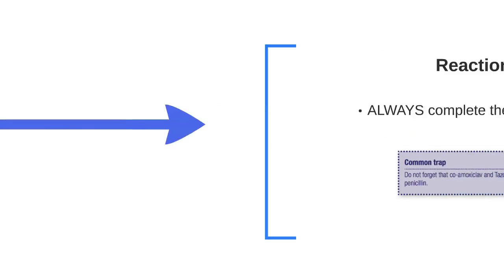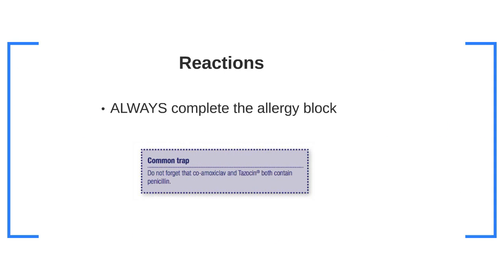Next we have R, another very important one. R stands for reactions. You should make sure that the allergy block of the chart is complete and take note of any specific allergies that are present. Importantly for antibiotics, you should remember that common drugs such as co-amoxiclav and Tazocin both contain penicillin.